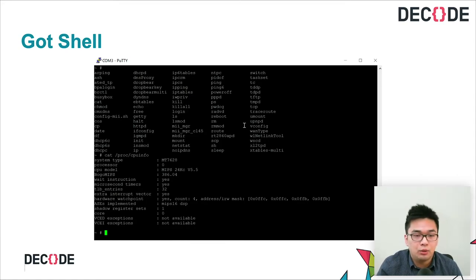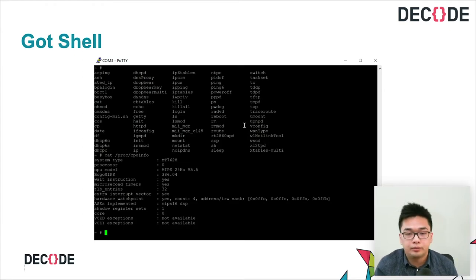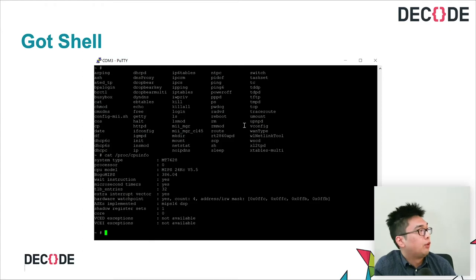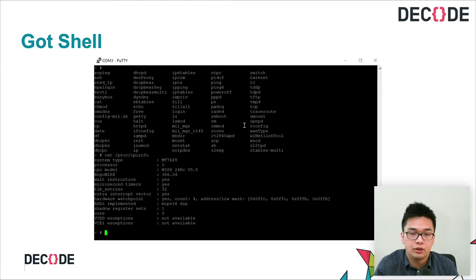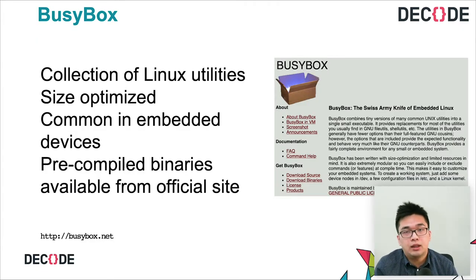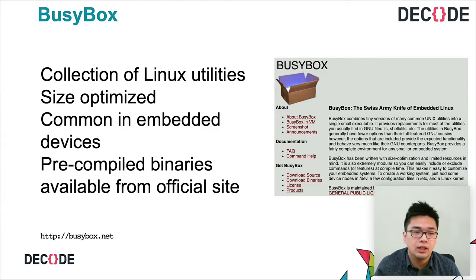Once we hit enter we'll have a shell, and browsing around we'll notice a MIPS 24KC family core. Since these embedded devices have very limited storage, they provide very few commands compared to a standard Linux distribution. To work around this, embedded device developers use BusyBox — a collection of Linux utilities that is size-optimized and jam-packed into one package. It's very common in embedded devices, and you can get precompiled binaries from their website and load them onto your device for a more fully-featured shell.